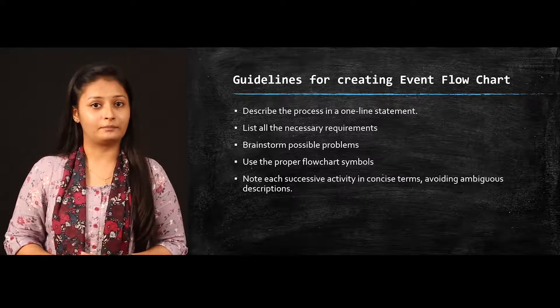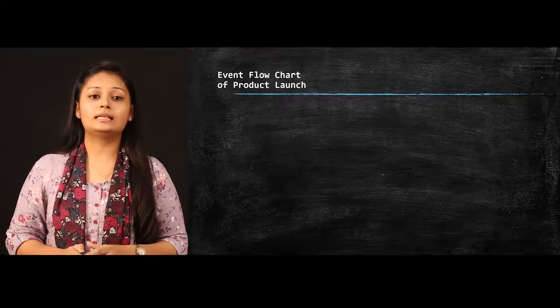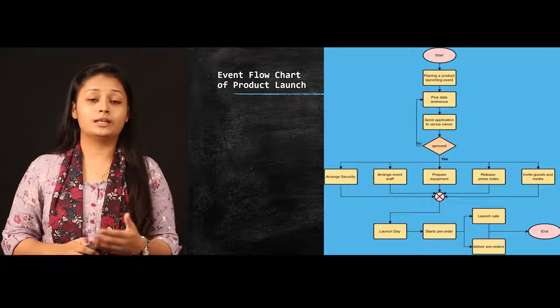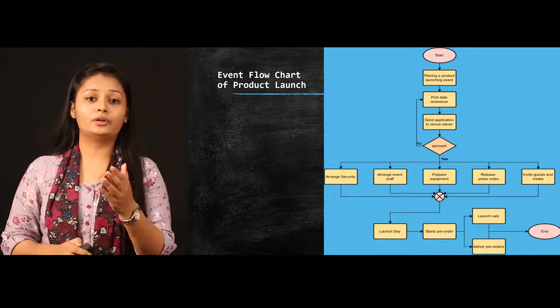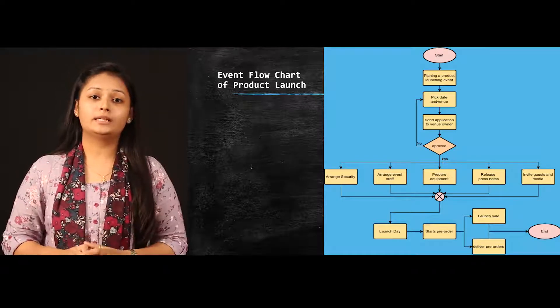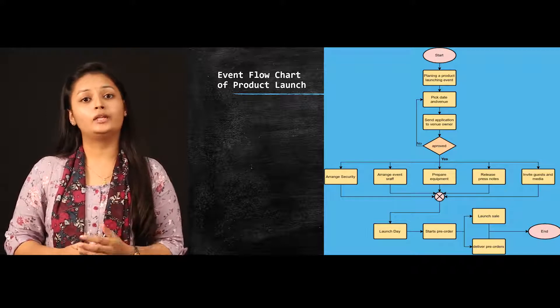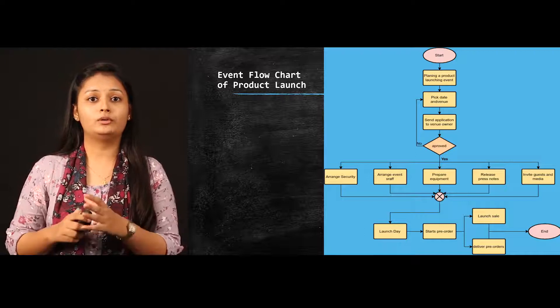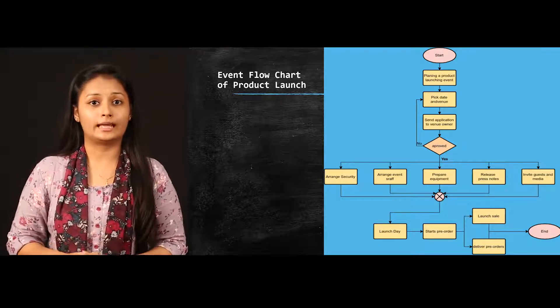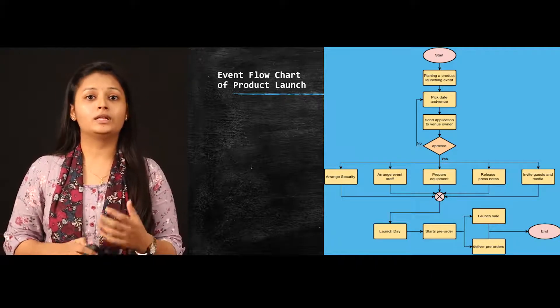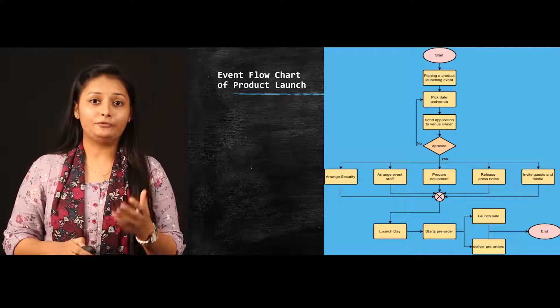Now let's have a look at the example of the flowchart. This is the example of a product launching event. When you start preparing the flowchart of the event, the first main thing you do is the planning of the product launch. After planning, you will decide the date and the venue of the event. After deciding the date, you will send an application to the venue owner to check whether on that particular date the venue is vacant or not. If not, you need to go step back and change your date.